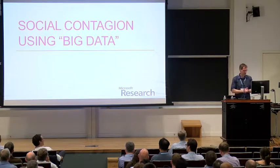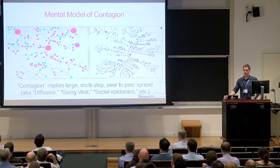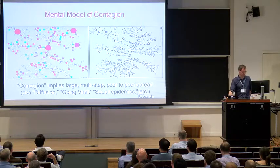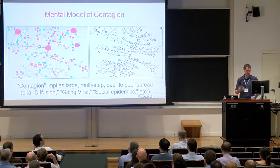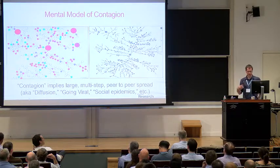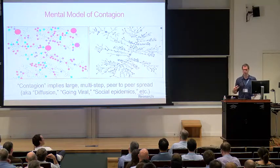Let's start with the question of social contagion. Everyone here is familiar with at least some of this literature, which is pervasive in economics, sociology, marketing, and these days in computer science and physics as well. We have dozens of models of how things spread between people — ideas, behaviors, and so on. Many if not all of these models can trace their origins to earlier mathematical models of infectious diseases.